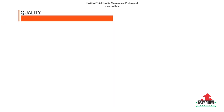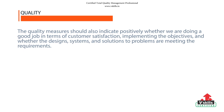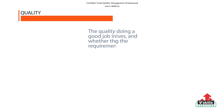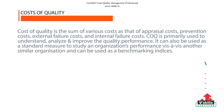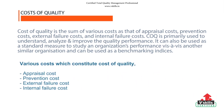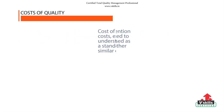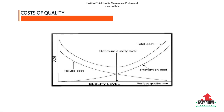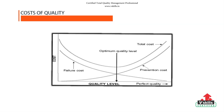It is generally believed that investing in prevention of failure will decrease the cost of quality, as failure costs and appraisal costs will be reduced. Understanding cost of quality helps organizations develop quality conformance as a useful strategic business tool that improves their product, service, and brand image. The quality curve clearly indicates that the optimum quality level can be achieved only when the failure costs and the prevention costs are equal.